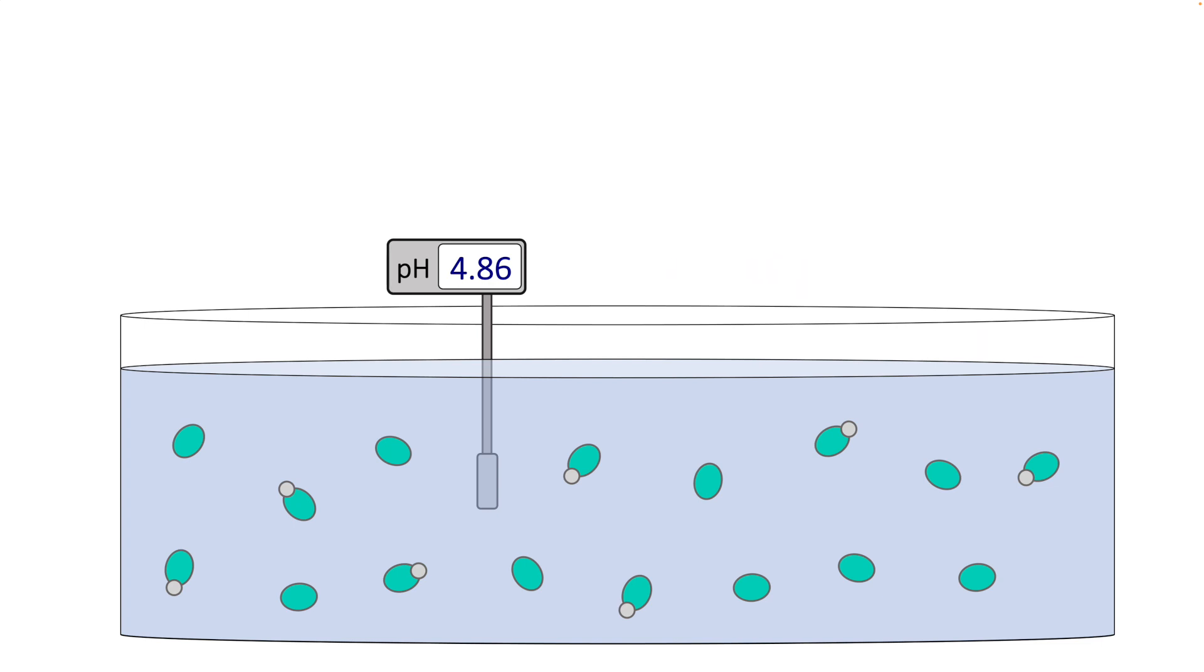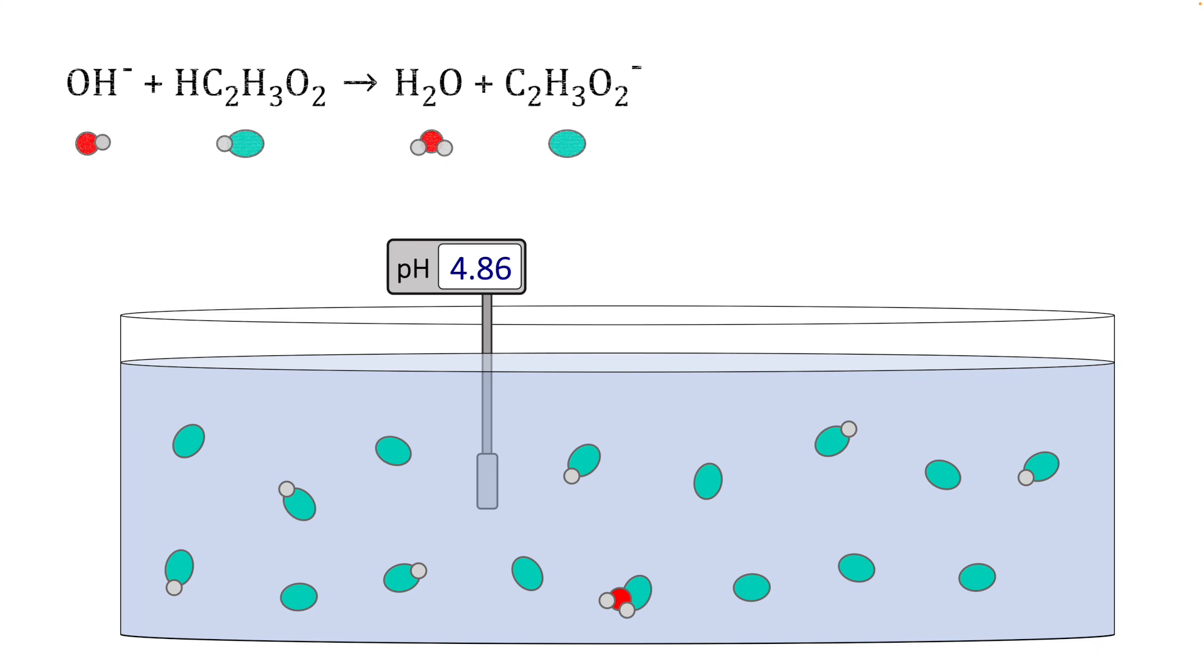Now, we can do this again if we add more of the strong base. More hydroxide ions enter the solution and encounter acetic acid molecules. Hydroxide reacts with acetic acid to make water and the acetate ion. And once again, strong base is converting acetic acid into acetate ions.